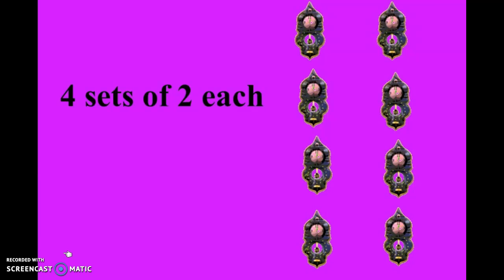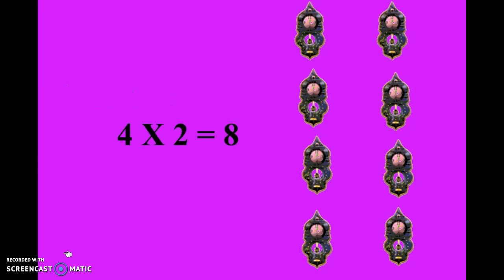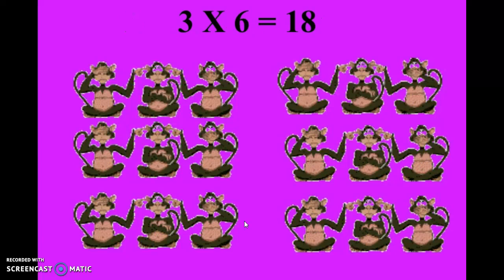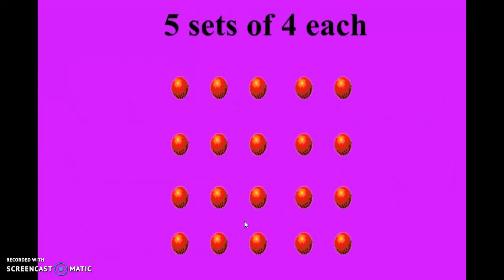Now we have four sets of two each, so four times two equals eight. Here we have six sets of three monkeys. Can anyone think of the multiplication problem for this? Please write it on your paper. Three times six equals eighteen — so altogether there are eighteen monkeys.